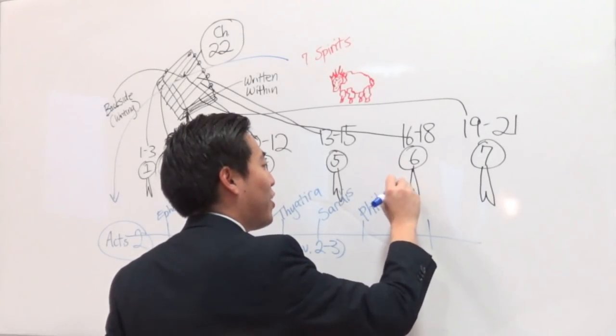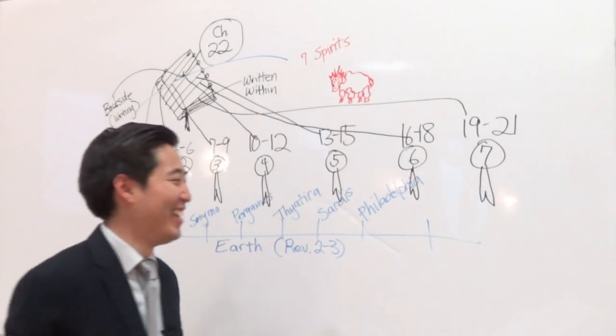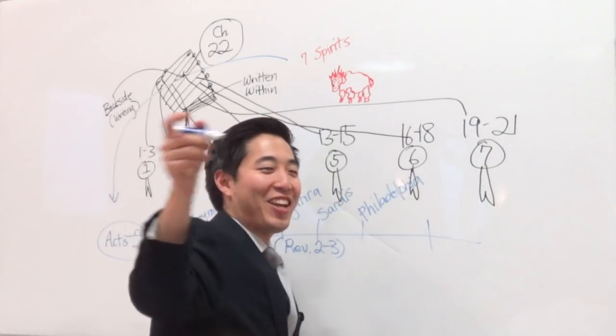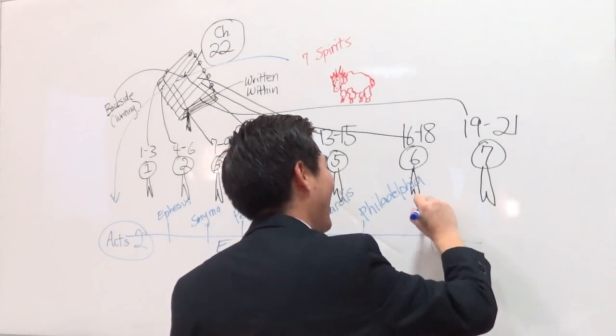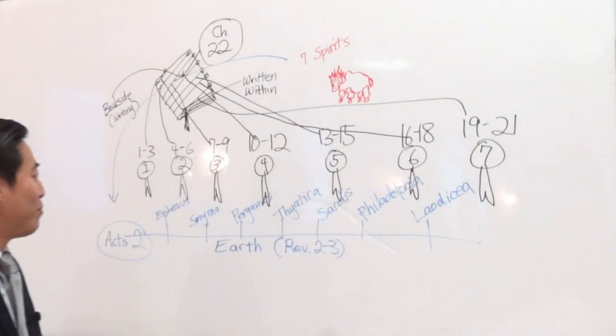And y'all don't know the last one obviously, right? Yeah, we have a Laodicean screaming it out. Laodicea. We all know that one. Why? Because we hate that age the most, we're living in it.